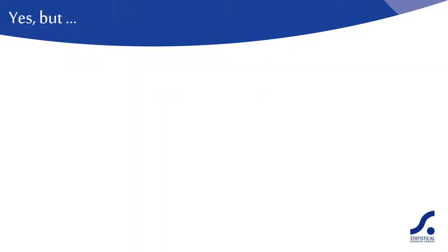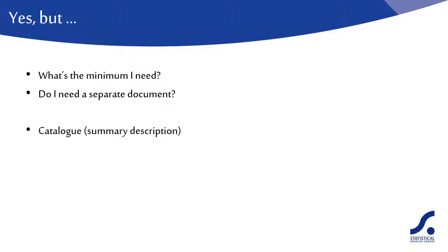Okay, you say, but what's the minimum I need to provide metadata? Do I need to produce a separate document? Well, no, not necessarily. For the household baseline, we have the study catalog giving a summary description, and we have the training manual giving a fuller description. This satisfies the requirements at the study level.